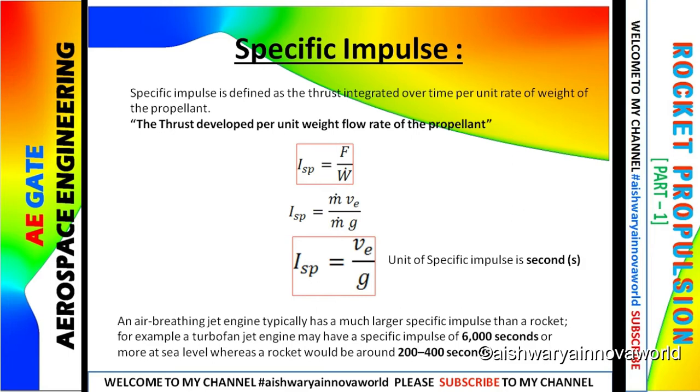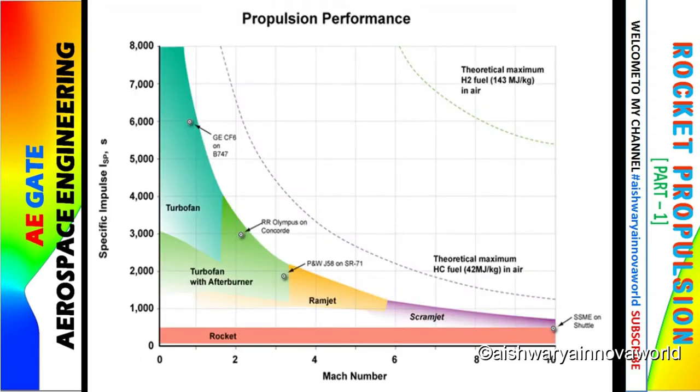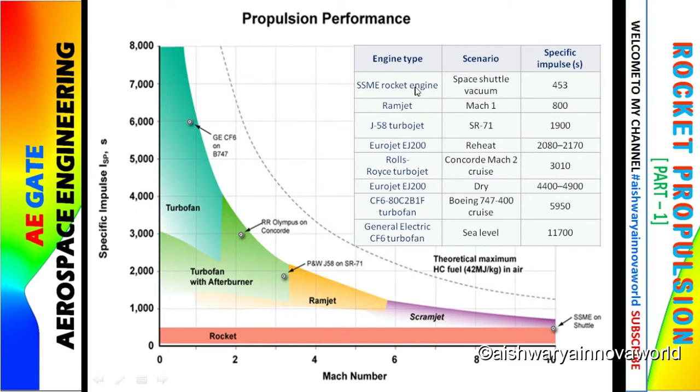Turbojet consists of 6000 seconds and the rocket around 200 to 400 seconds only. See this graph. You can see here the rocket lying in the lowest zone around 200 to 400. Next to the rocket we have scramjet, then ramjet, then turbofan with afterburner, followed by turbofan. Rocket engine consists of the space shuttle vacuum around 453 seconds, whereas ramjet gives around 800 seconds. The highest one you can see is turbofan at 11,700 seconds. So you better remember this range where they belong to.